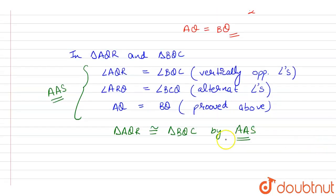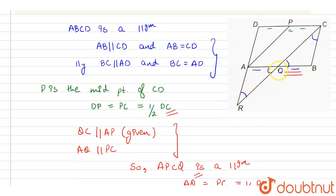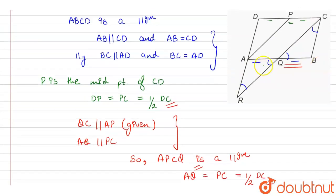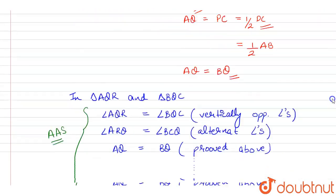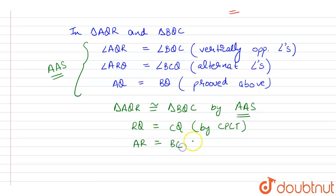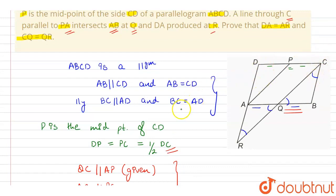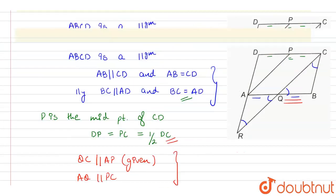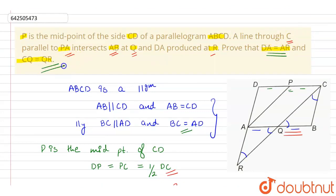Since the two triangles are congruent, by CPCT, RQ is equal to CQ, and AR is equal to BC. But BC is equal to AD (since ABCD is a parallelogram), so AR is equal to AD. Thus we have proved that DA is equal to AR and CQ is equal to QR.